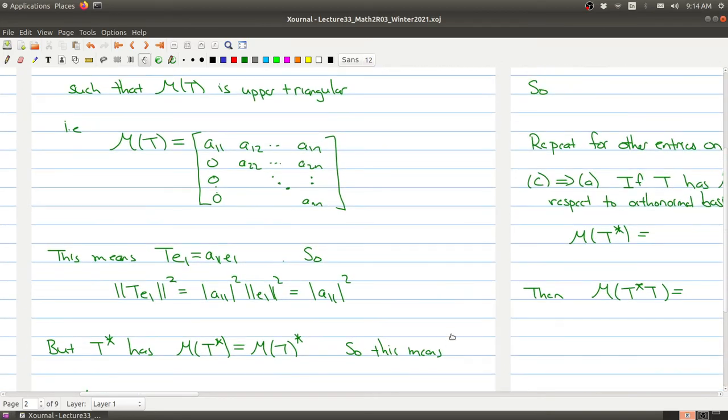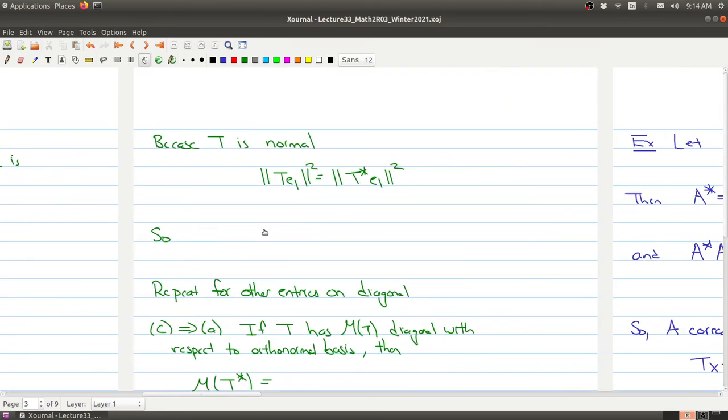Now, one of the properties of normality is that if T is normal, T evaluated at any vector and taking its norm is the same as the norm of the adjoint at that same vector. We can add the squares there if we need it. But we've actually computed these two guys. So on this side, we have A11 squared. And on this side, we have the length of A11 squared plus A12 squared, all the way out to the length of A1n squared. So the two sides are equal.